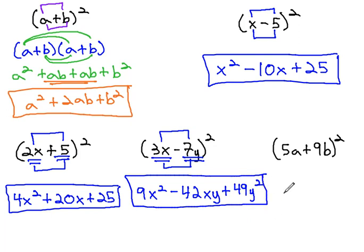Let's do one last example. 5a plus 9b squared. We square the first term. 5a squared becomes 25a squared. And then we have the product twice. 5a times 9b is 45ab, and another 45ab gives us 90ab. And finally, we square the last term.